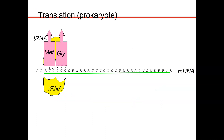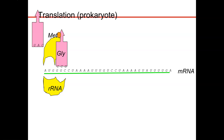Now let's look at my copy of translation. I only have two sites — I only put the P and the A site. The E-site is where the transfer RNAs just leave. The pink are the transfer RNAs, yellow are the ribosomal RNA, and that green line is your messenger RNA. As soon as we have a transfer RNA with methionine in the P-site and another one in the A-site, we have that transfer of the amino acids and a peptide bond is formed.